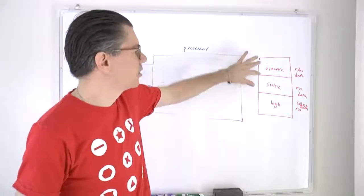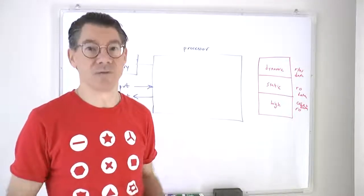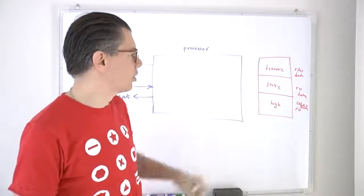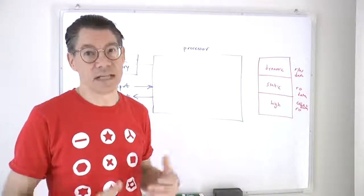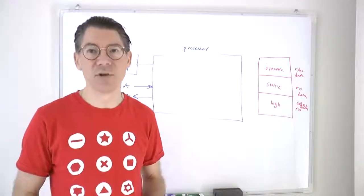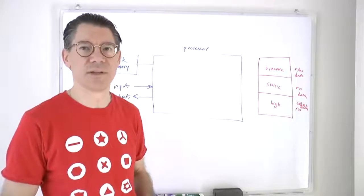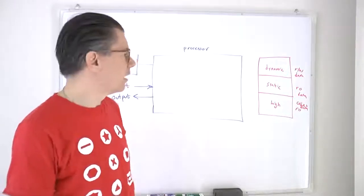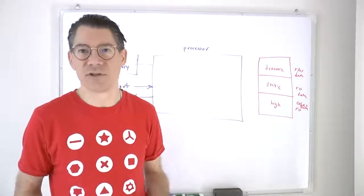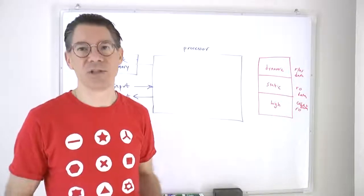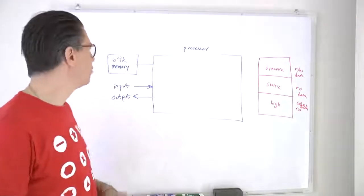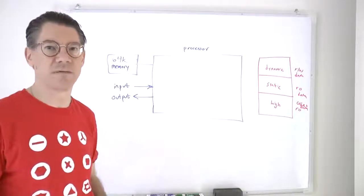Dynamic memory can be read and written. The static and high areas are read-only. The static area contains data and tables; the high memory contains code — the actual Z-Machine routines. Because static and high are read-only, they could be stored on read-only media such as a floppy disk, and don't have to be stored in RAM. Only dynamic memory needs to be in RAM, which is why you can get away with 64K of RAM.